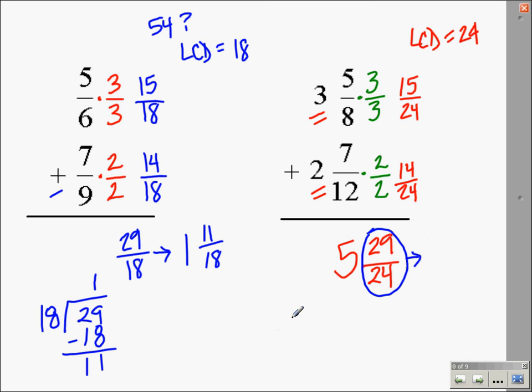Let's move it to the side here. 24 will go into 29 one time with 5 remaining. So 29/24 is 1 and 5/24.